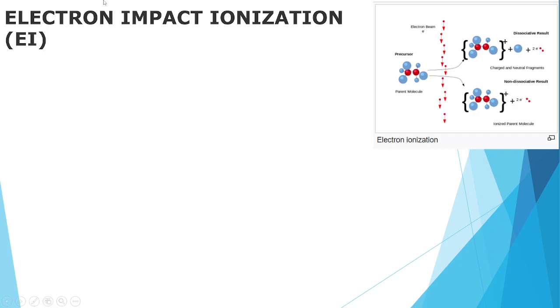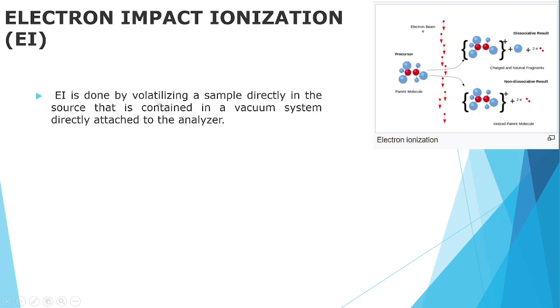EI is done by volatilizing a sample directly in the source that is contained in a vacuum system, directly attached to the analyzer vacuum system.